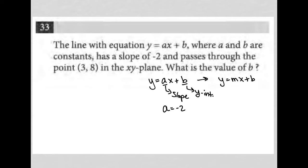Okay, so if the slope is negative 2, that means that my rise over run is negative 2. If it goes through the point 3, 8, that just means that I have an x value that is equal to 3, and a y value that is equal to 8. What is the value of b? So we're trying to figure out what b is.